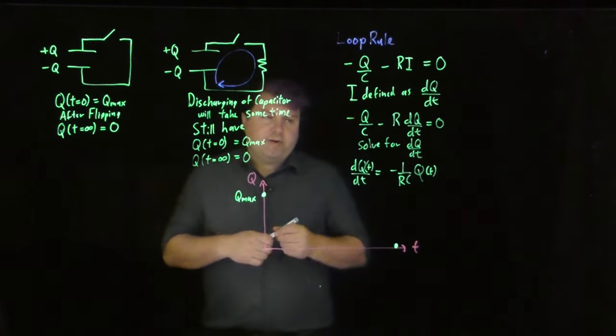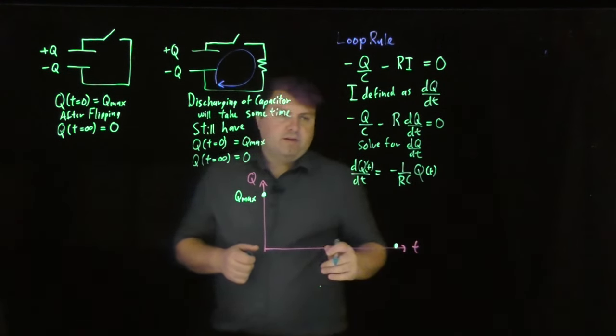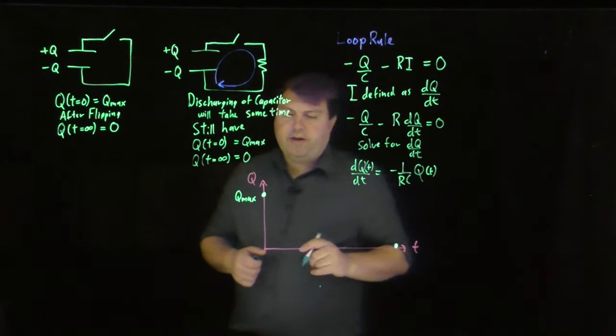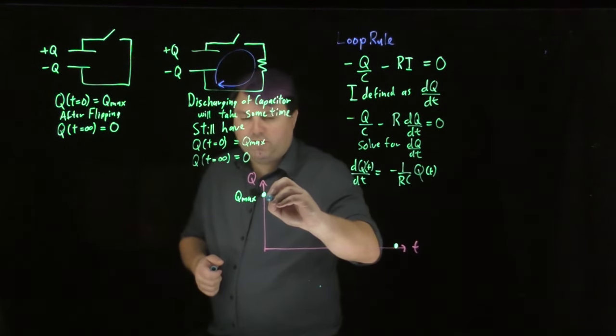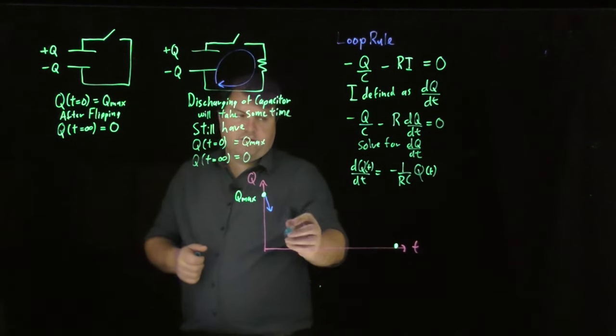And then what we can see is the dq dt, the slope of this curve is going to be negative. And it's going to be based on how much charge we have. So if I have a lot of charge, it's going to be a very large negative slope.